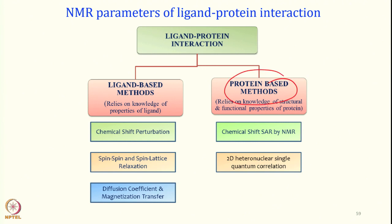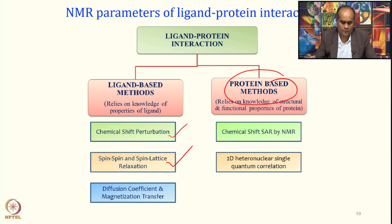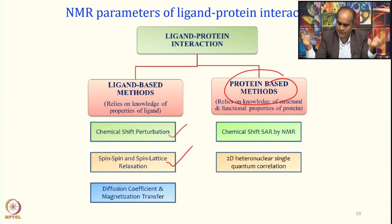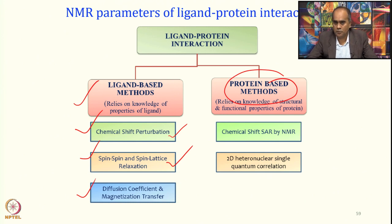We can classify ligand-protein interactions into two categories. Ligand-based methods rely on knowledge of the properties of the ligand, typically a small molecule. We can look at chemical perturbation — the relaxation we already discussed — and changes in resonance position, as well as how they are diffusing. The diffusion coefficient upon binding: the small molecule will diffuse differently when free versus bound. All those we had already finished.